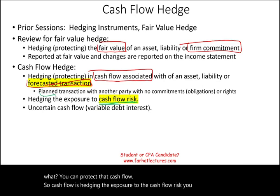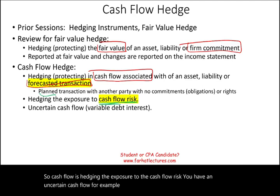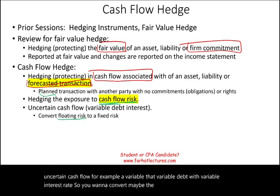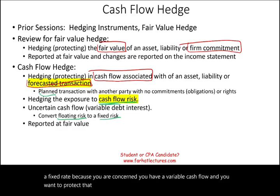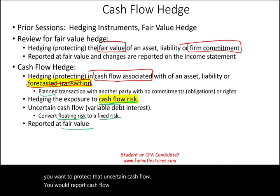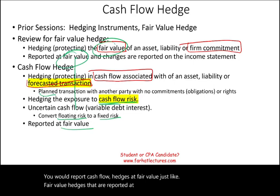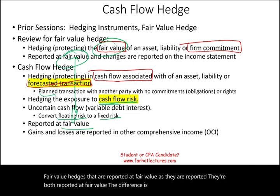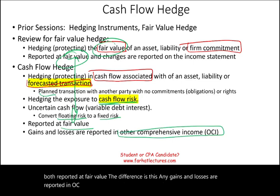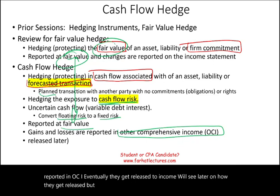Cash flow hedging addresses exposure to cash flow risk. You have an uncertain cash flow — for example, a variable debt with a variable interest rate — and you want to convert the floating rate into a fixed rate to protect that uncertain cash flow. Cash flow hedges are reported at fair value, just like fair value hedges — both are reported at fair value. However, any gains and losses on cash flow hedges are reported in OCI and eventually released to net income.